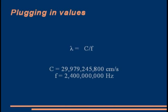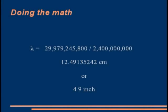So lambda or wavelength is equal to C divided by F. Your wavelength is equal to 29,979,245,800 divided by 2,400,000,000. When we plug these values in for WiFi the wavelength comes out to about 12.49 centimeters or 4.9 inches. So there we go. Now we understand what the wavelength is.